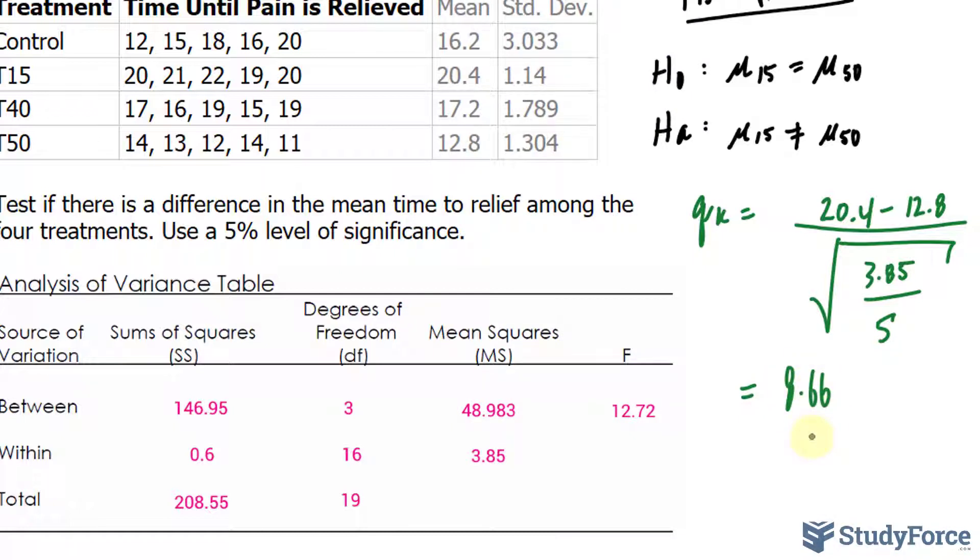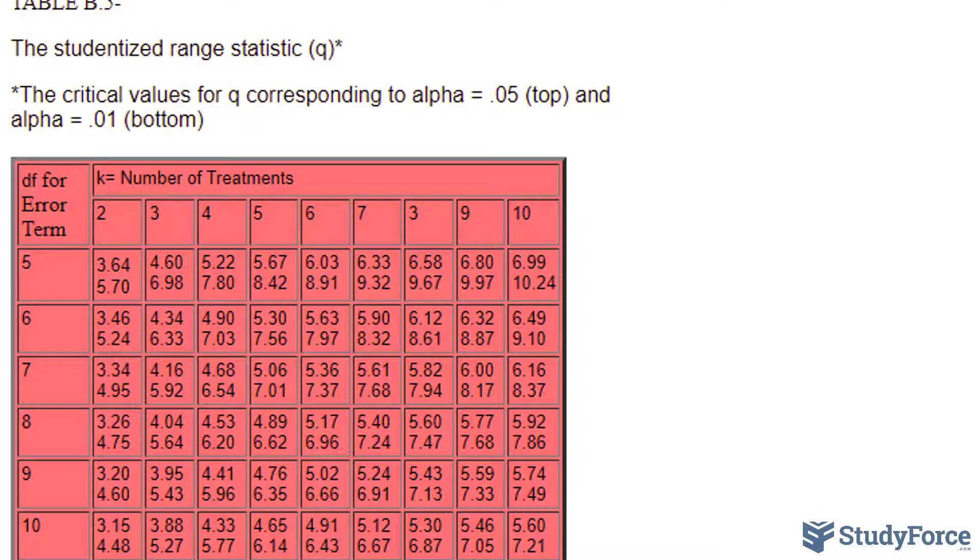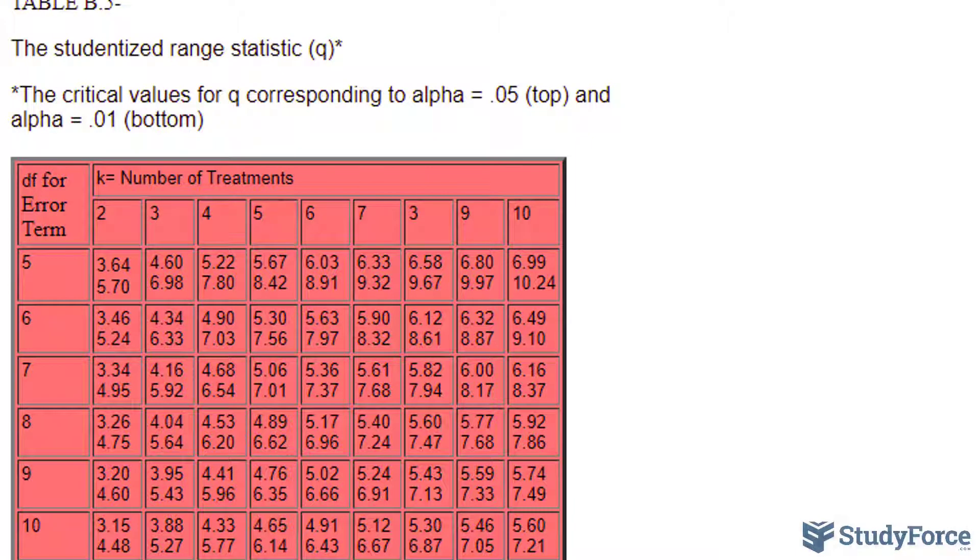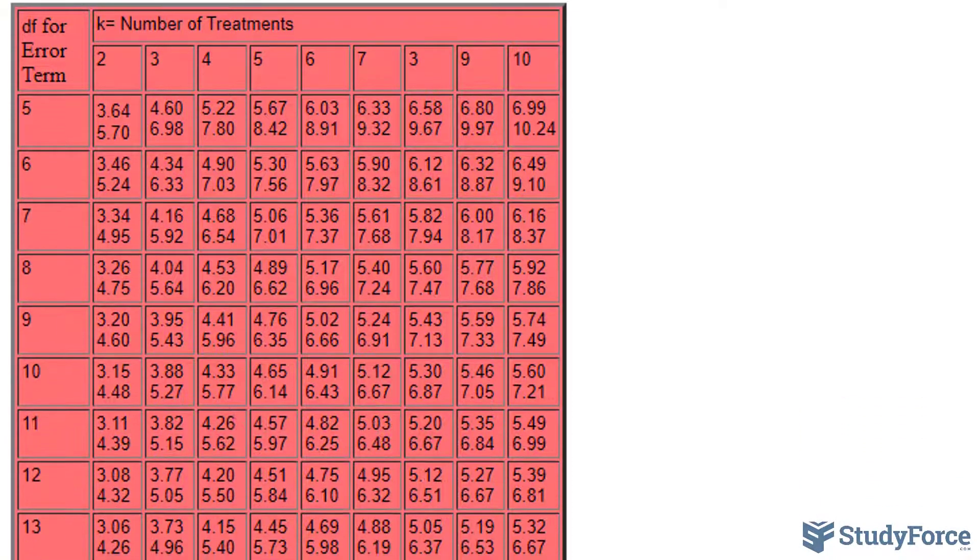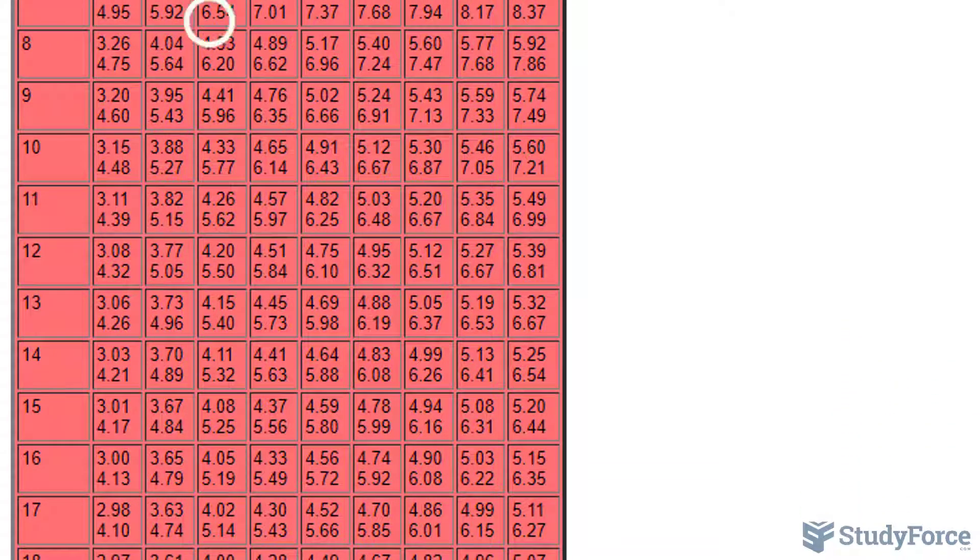This needs to be compared with a critical value, Qc. The critical value is based on the number of groups, which is 4, and the degrees of freedom, which is 16. Here's a table for the studentized range statistic, which is synonymous with the Tukey procedure. We have 4 treatments, and the degrees of freedom is 16. I'll be using that first value, 4.05, instead of 5.19 beneath it. That's for a significance level of 1%. We are doing 5%, so 4.05.